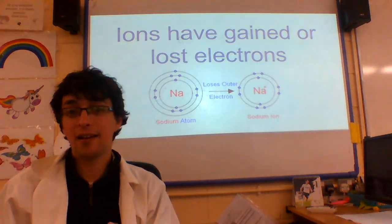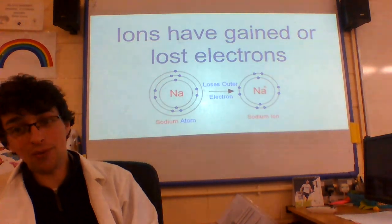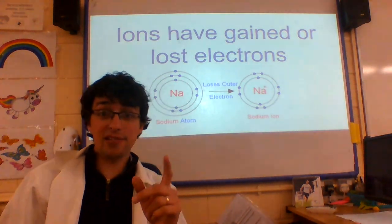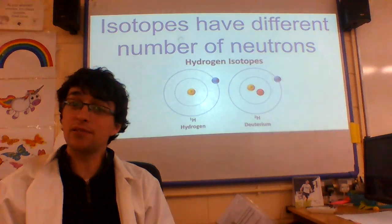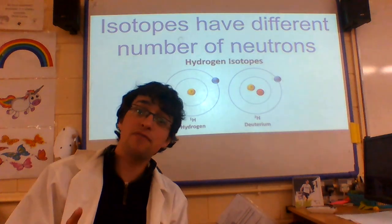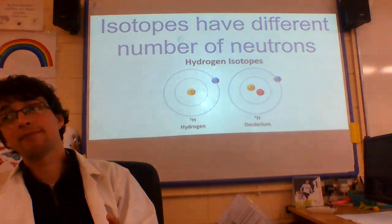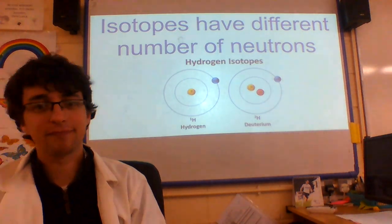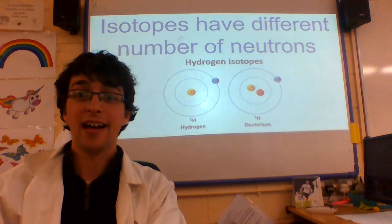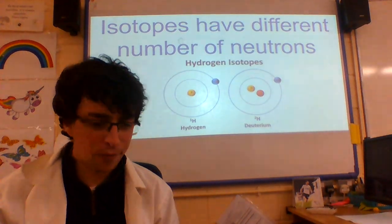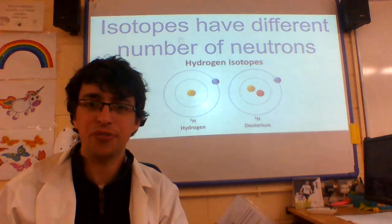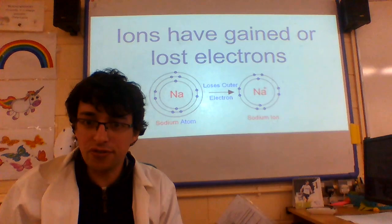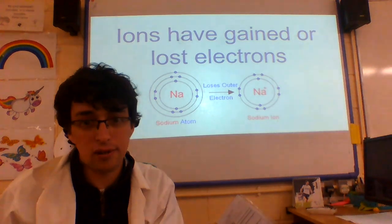So ions are when we've gained or lost electrons. Jolly good, well thank you for that song, strange individuals singing. What have we got then? So ions have gained or lost electrons — nothing to do with ironing or clothes at all.